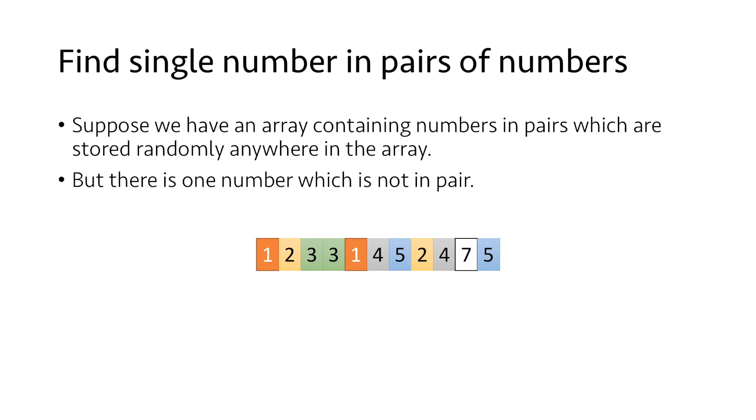For example, in the given array, we can observe that we have a pair of every number. We have two 1s, two 2s, two 3s and so on, but we have only one 7. That is, 7 is the number which does not occur in pair.